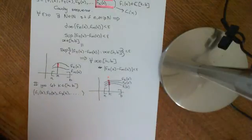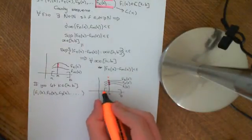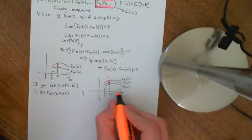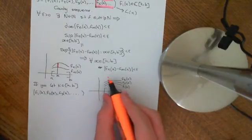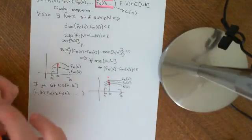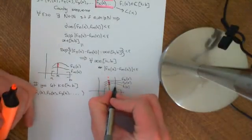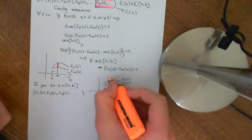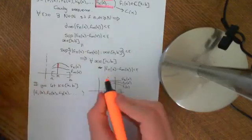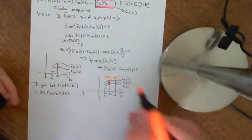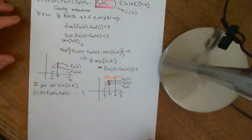We'll define the pointwise limit function to be the function that ascribes every value k in [A,B] its pointwise limit — i.e., k maps to its pointwise limit. So you'd get a whole function of pointwise limits, and that's what we want to prove exists.